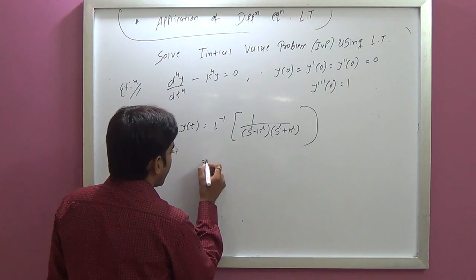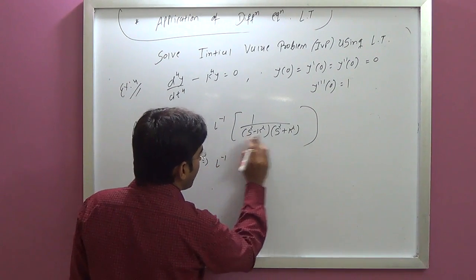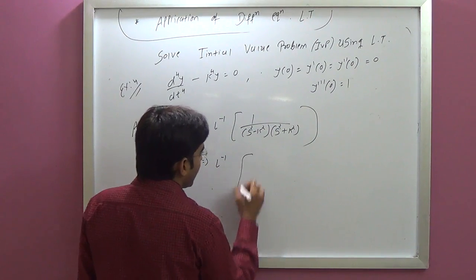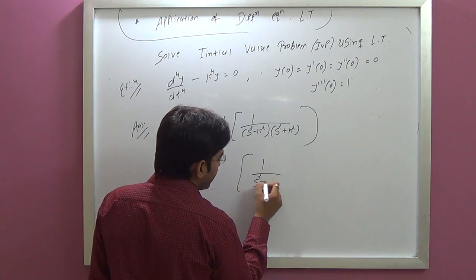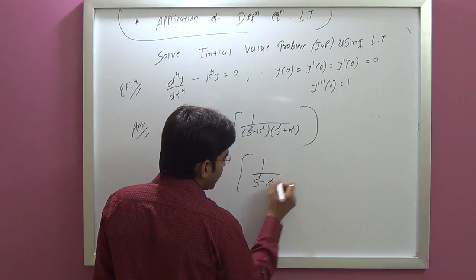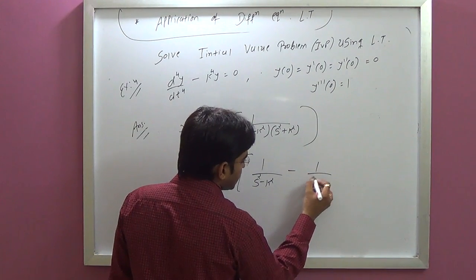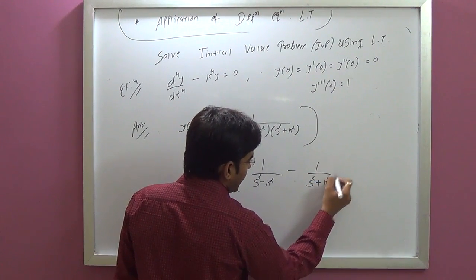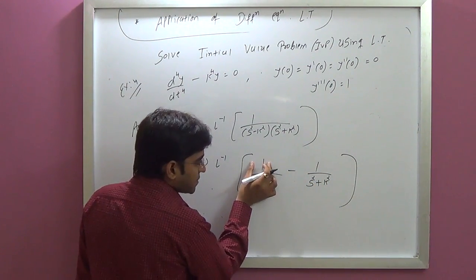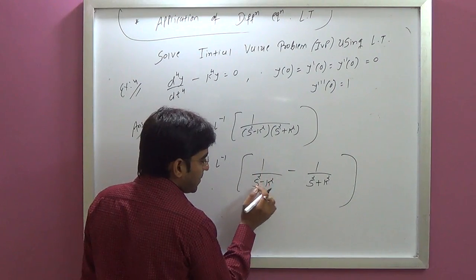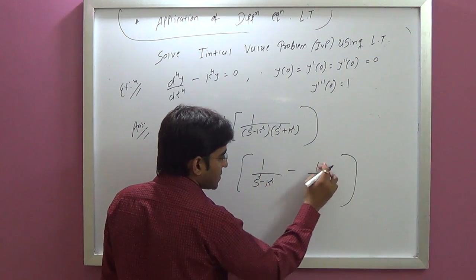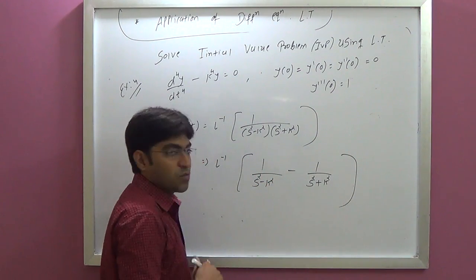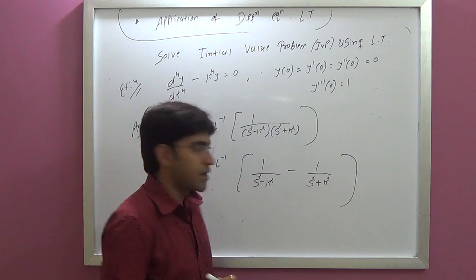Simplification: (s² minus k²)(s² plus k²) expands. The remaining numerator reduces to 2k², which acts as a constant for partial fractions.